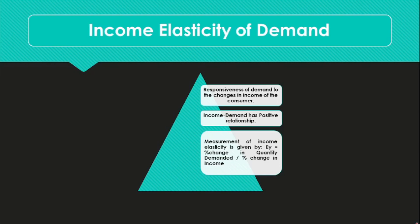An important point to be noted here is that income elasticity of demand has a positive relationship. Unlike the price and demand relationship, the income and demand relationship is positive because with the increase in income, consumers tend to increase their demand for the quantity of a particular commodity. This gives us the direction that income and demand will both increase and decrease together. The extent to which there will be responsiveness of change in the quantity demanded with the change in income is the subject matter of income elasticity of demand.